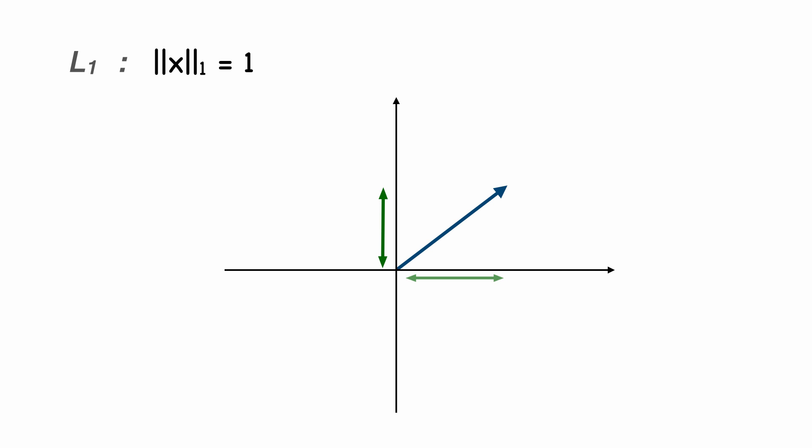Remember, this is the sum of the absolute value of the components of x. We can already see four vectors which satisfy this equation. These are the vectors pointing to the coordinates (0,1), (1,0), (0,-1), and (-1,0).